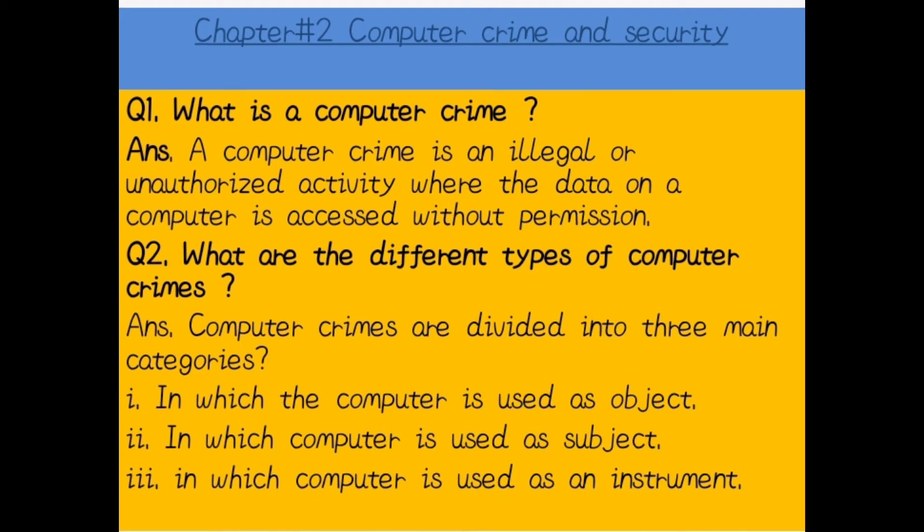Let's start from question number one: What is computer crime? Computer crime is illegal or unauthorized activity where the data on the computer is accessed without permission. یعنی کہ ہر وہ crime جس میں کسی کے data کو — جو اس کے computer میں موجود ہے — غلط مقاصد کے لیے یا without permission use کیا جائے، وہ computer crime کہلاتا ہے۔ Computer is used as subject, object, and instrument — these are the different types of computer crimes.